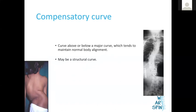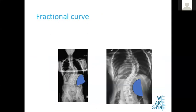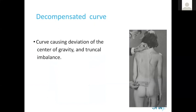What about compensatory curves? When the child bends, another flexible part of the back tries to balance the bend; the curve trying to balance the center of gravity is called a compensatory curve. A fractional curve is a curve which is only one-fourth of a circle, while a full or regular curve is at least half the curve. These are quite colloquial definitions.